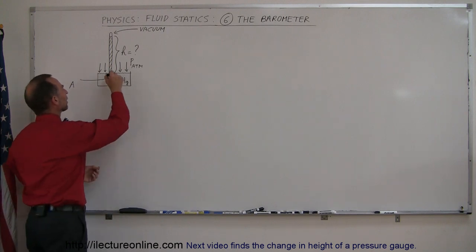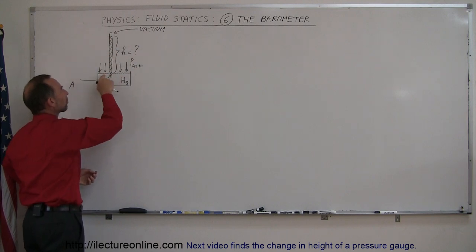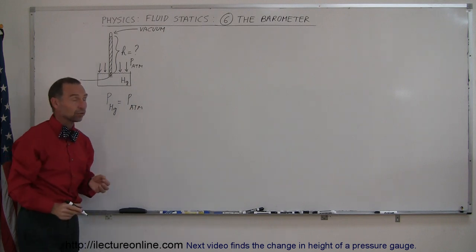So what we can say here is at this point right there, that the pressure caused by the height of the mercury equals the pressure of the atmosphere. So at this location right there, we can say that the pressure due to the mercury is equal to the pressure due to the atmosphere. And that's after all what we're trying to measure.